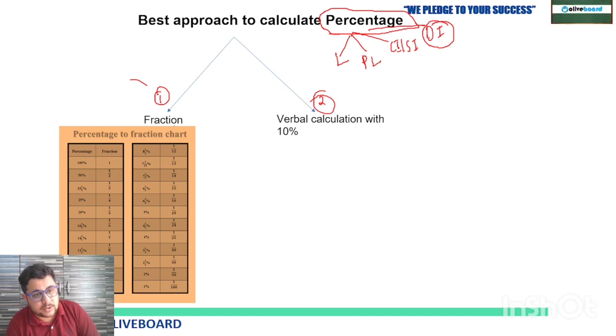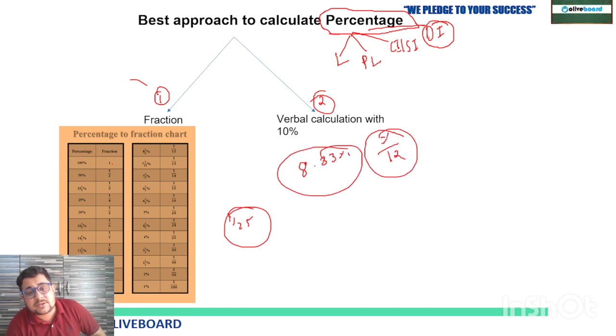First is fraction to percentage conversion. Some of the most important fraction to percentage conversions I have shared with you here. You have to remember these: 1 equals 100%, 1/2 is 50%, 1/3 is 33.33%, 1/4 is 25%, 1/5 is 20%, 1/6 is 16.66%, and so on till 1/25. When they ask you 33.33% or 8.33% of x, by just dividing 12 with that number, you can calculate. So 1/24, 1/25, 1/30, 1/40, 1/50, 1/100—all I have shared here, so this you have to keep in your mind.